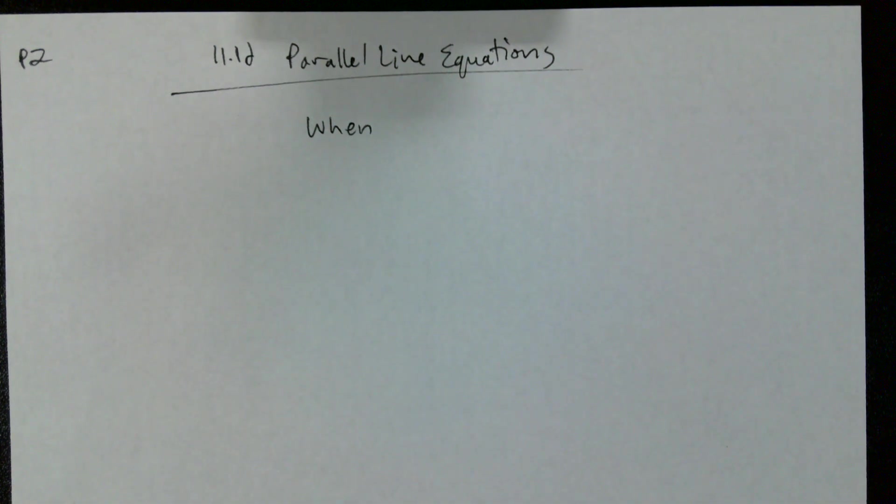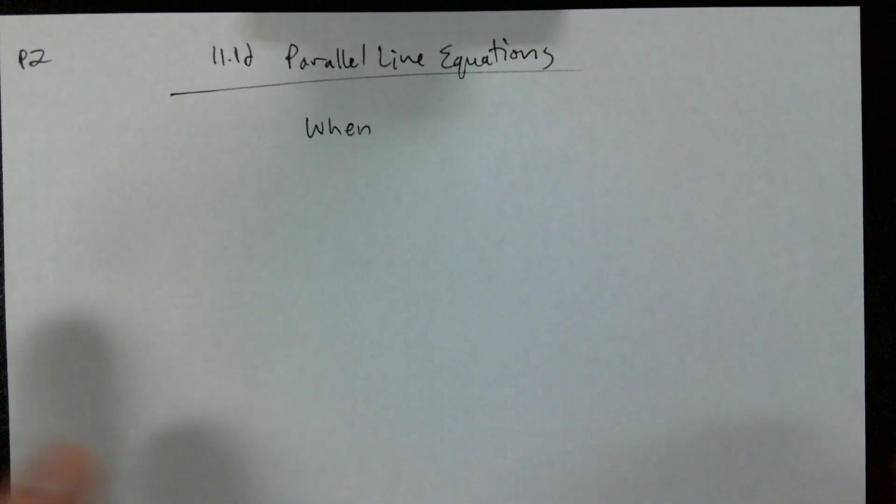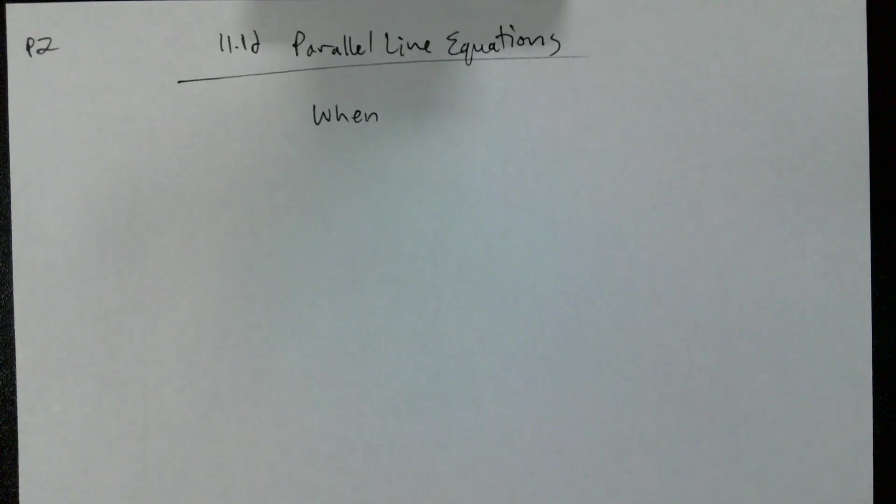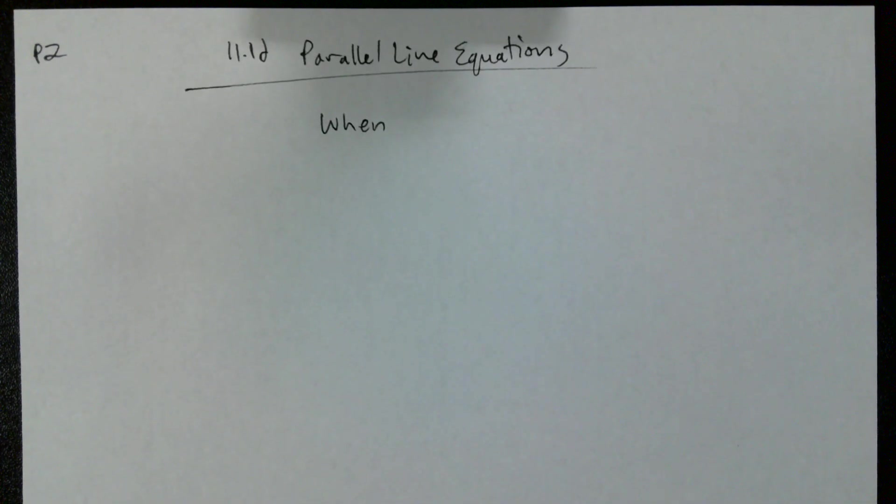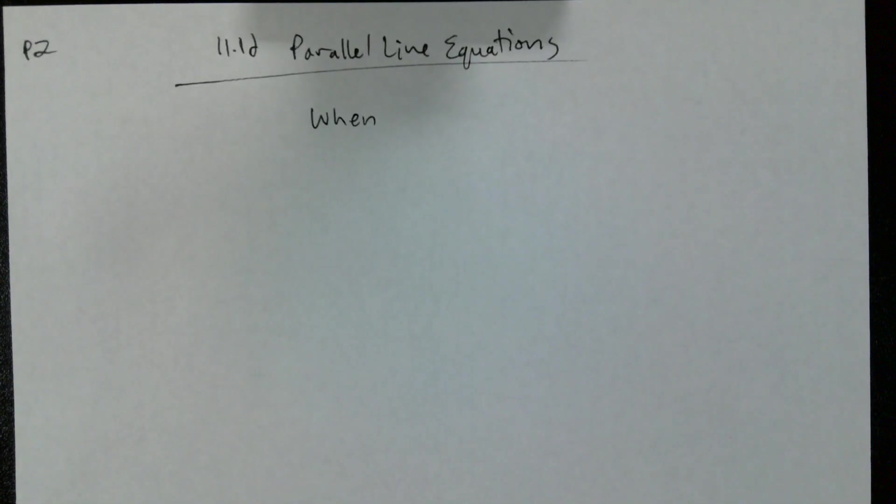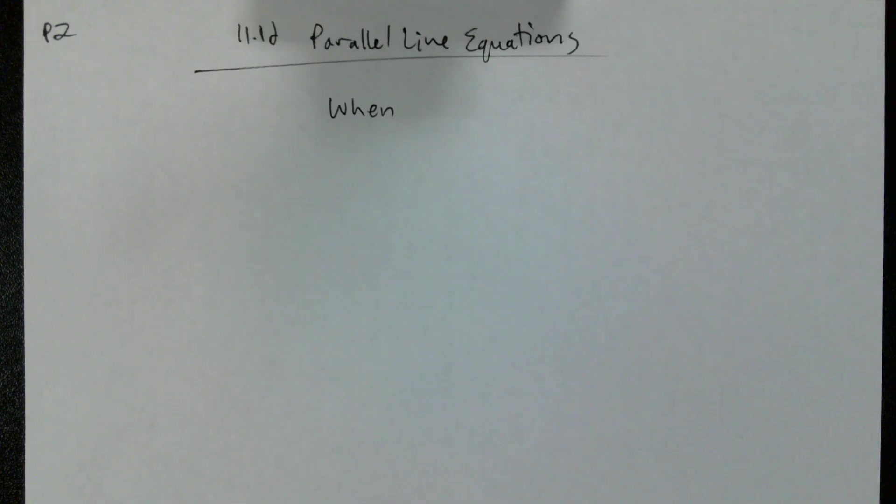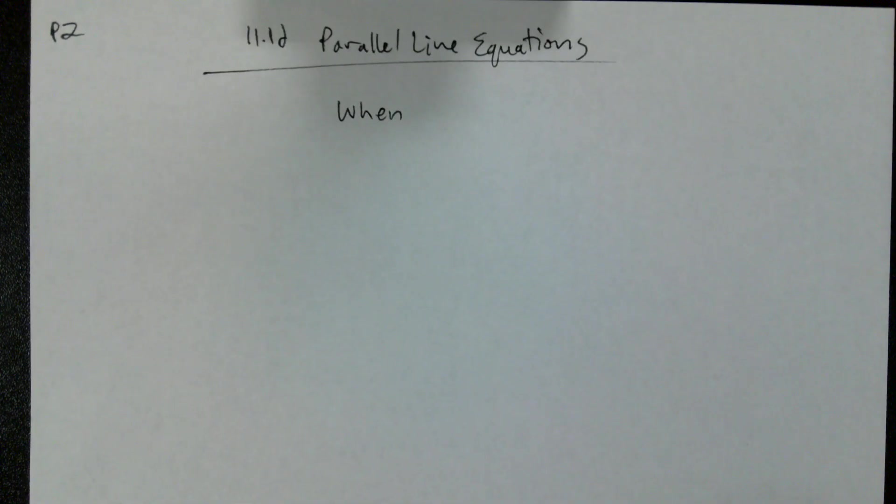This lesson is going to be pretty straightforward. It's just like 11.1b when we talked about angle measure equations. Same kind of thing except now we're dealing with the parallel line angle relationships.